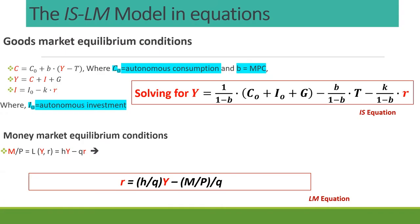We have solved for the IS curve relating two key variables in the macroeconomy: real GDP (Y) and the real interest rate. Those are the two key variables in this Keynesian model. This analysis is known as the demand-side analysis — we are looking at everything from the demand side.